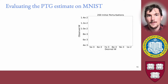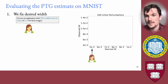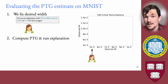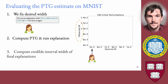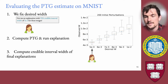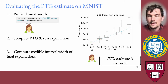How well does the PTG estimate work? We evaluate it on the MNIST dataset by considering a number of different desired credible interval widths. For each width and for test instances in MNIST, we compute perturbations-to-go for each instance, run the resulting explanations for that number of perturbations, and then compute the credible interval width of the final explanations. Ideally the desired width should align with the observed width along the identity. In general, the PTG estimate is quite accurate at outputting the number of perturbations necessary to achieve different desired levels of uncertainty.